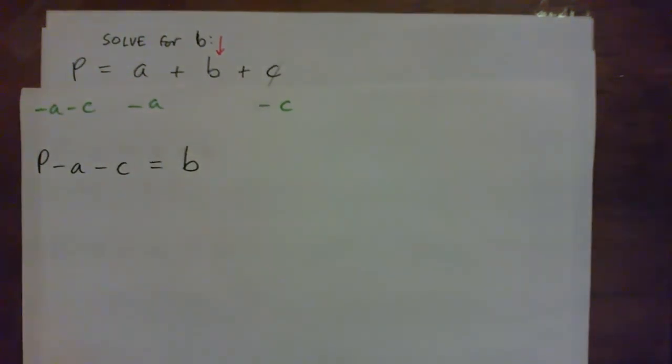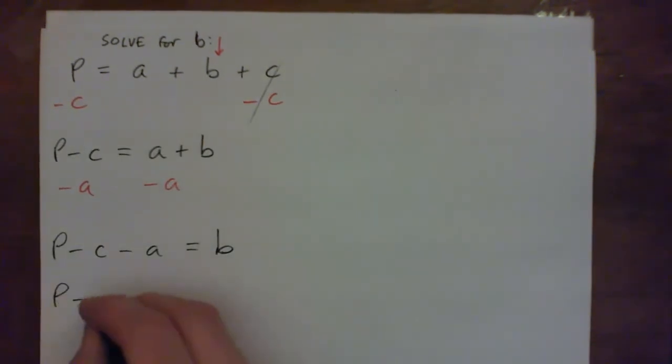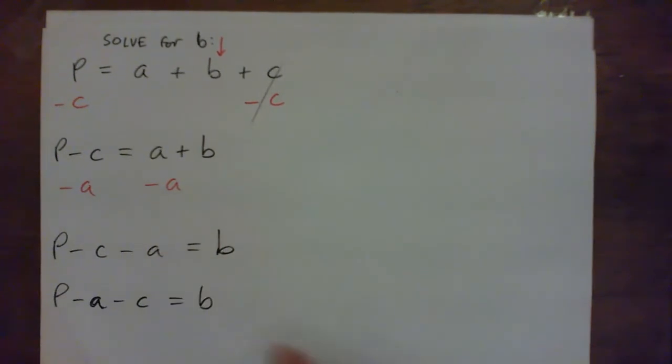And of course this is a negative A, a negative C. So we could also write this P minus A minus C equals B. Both ways are correct. Both mean the same thing.